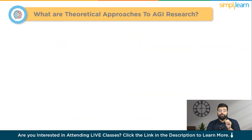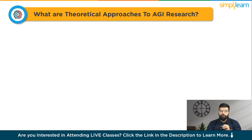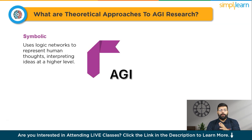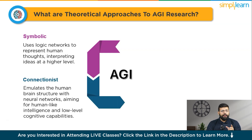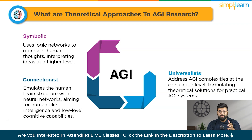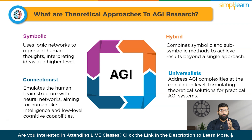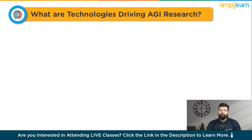There are several theoretical approaches that drive AGI research, focusing on replicating human cognitive processes. First is symbolic, which uses logic networks to represent human thoughts, interpreting ideas at a higher level. Then comes connectionist, which emulates the human brain structure with neural networks, aiming for human-like intelligence and low-level cognitive capabilities. Next is universalist, which addresses AGI complexities at the calculation level, formulating theoretical solutions for practical AGI systems. And finally, hybrid combines symbolic and sub-symbolic methods to achieve results beyond a single approach.